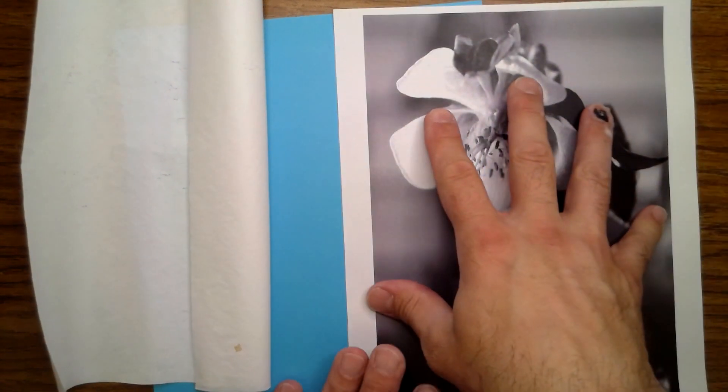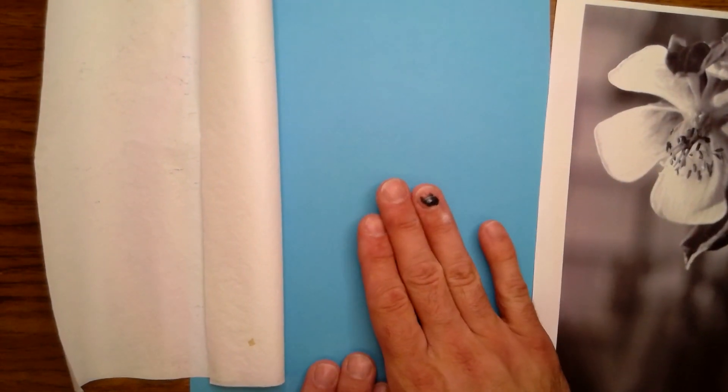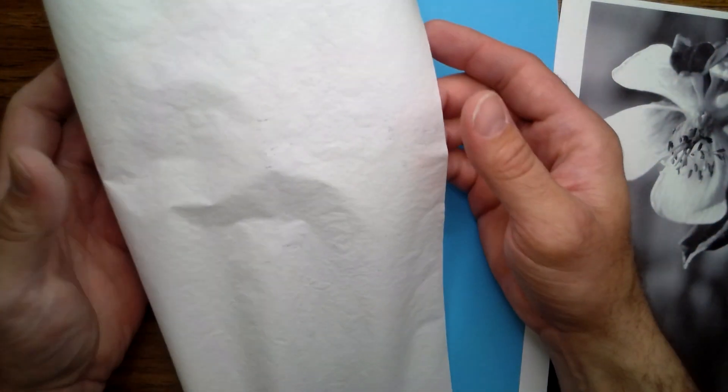All right, so I have my printed photo. This is going to be used to do the graphite transfer onto my colored sheet of paper. What I have here is a piece of white transfer paper called seral paper.